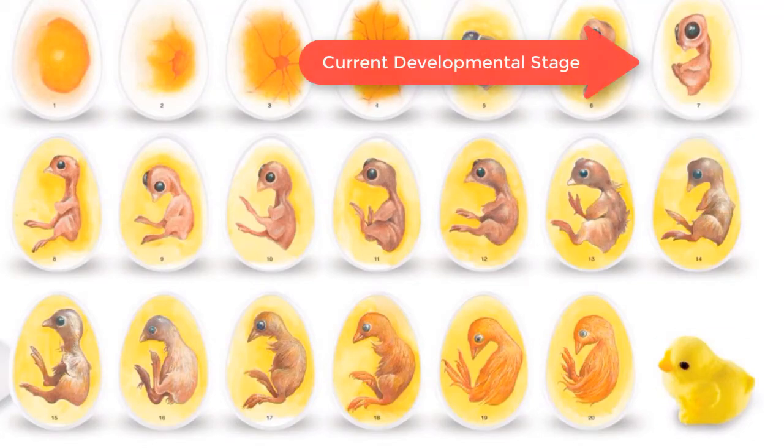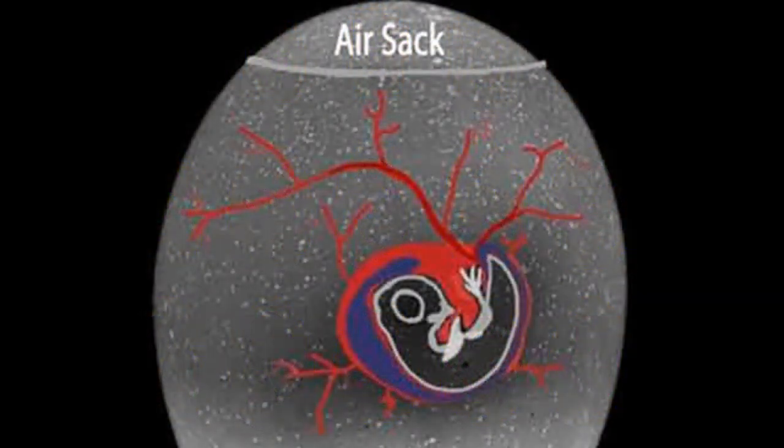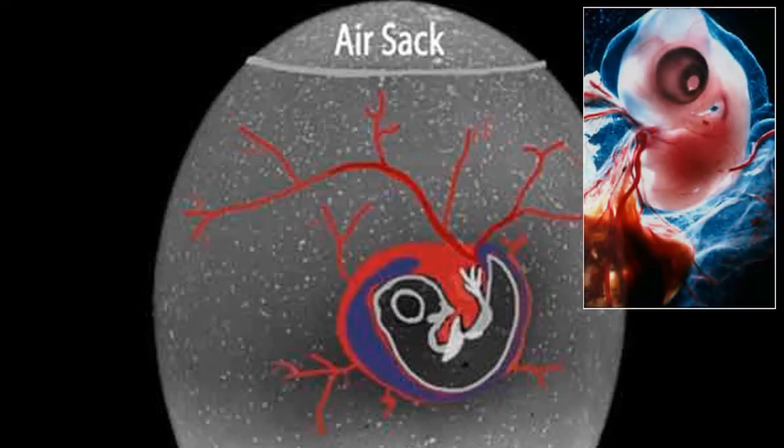He's going to have some eyes. He's got his heart that's developed. His heart is beating right now. He actually kind of looks like a little, really weird blobby chicken.